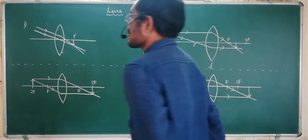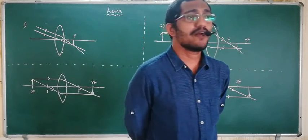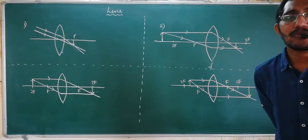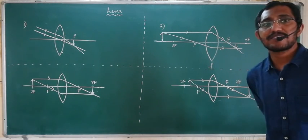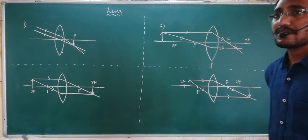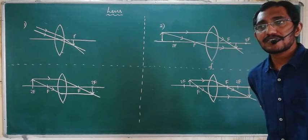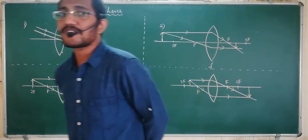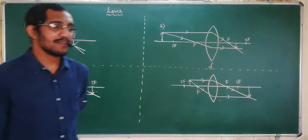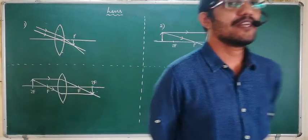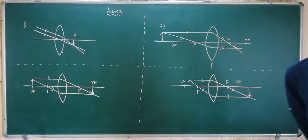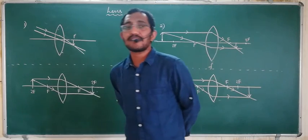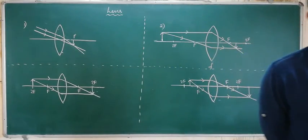So how many surfaces does a lens have? Two refracting surfaces. Out of these two, at least one refracting surface is a curved one. If it is a spherical one, it is called a spherical lens. There are two kinds of lenses generally: convex lenses and concave lenses, which are converging lenses and diverging lenses respectively.